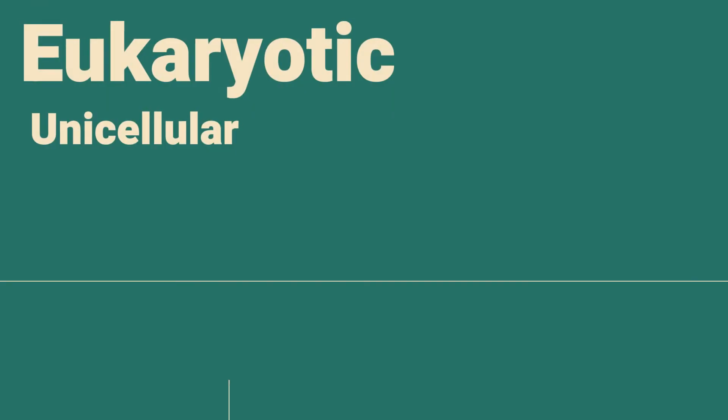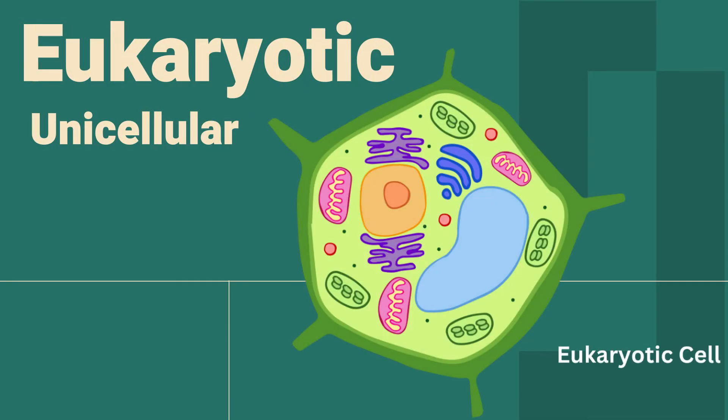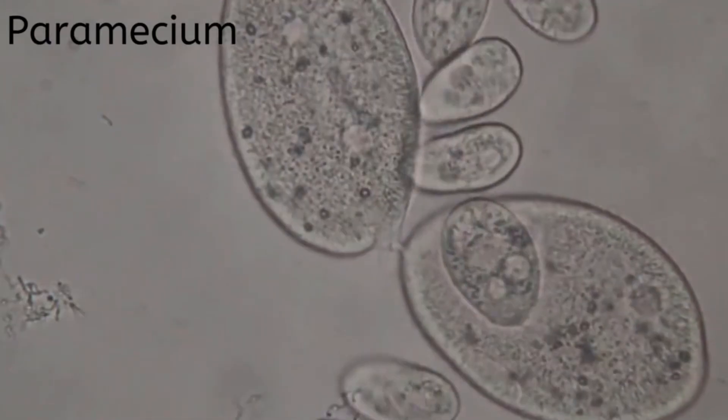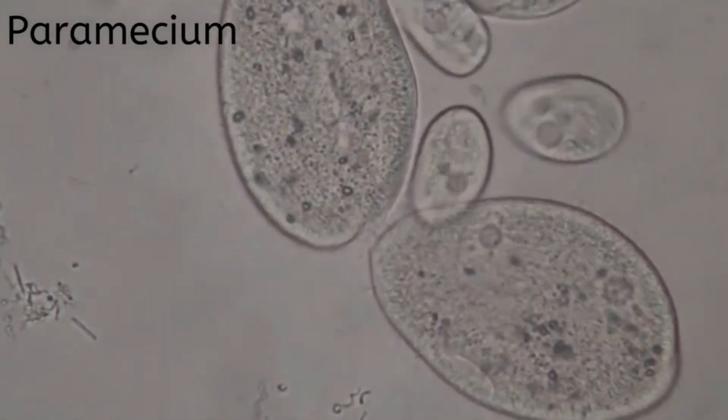Unicellular eukaryotic cells do contain a nucleus and membrane-bound organelles. Examples would include these protists.